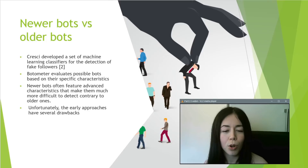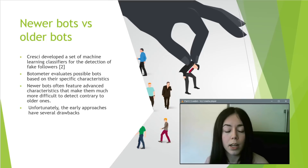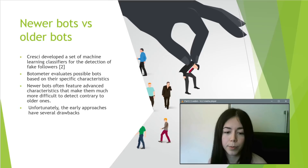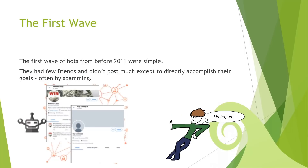Newer bots often feature advanced characteristics that make them much more difficult to detect than older ones. These early approaches have several drawbacks — for example, humans have been proven to fail at spotting bots, and in a recent experiment, only 24% of bots were correctly labeled by humans. Bot evolution is a vicious cycle: creating smarter bot detectors leads to smarter bots, which again leads to smarter detectors, and so on. The first wave of bots until around 2011 was simple — bots had few friends and didn't post much except to accomplish their goals, often by spamming.